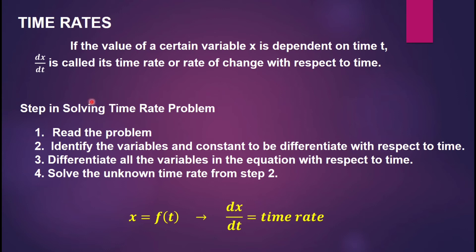The steps in solving a time rate problem: first, read the problem; second, identify the variables and constants to be differentiated with respect to time; third, differentiate all the variables in the equation with respect to time; fourth, solve the non-time rate from step two. For a given x equals f of t, dx over dt is the time rate.